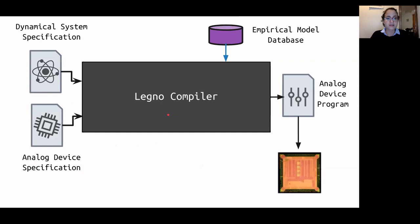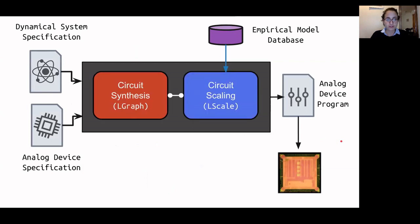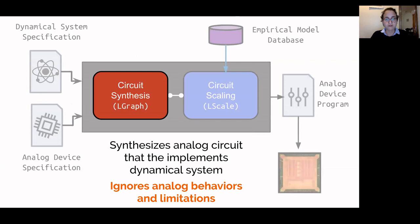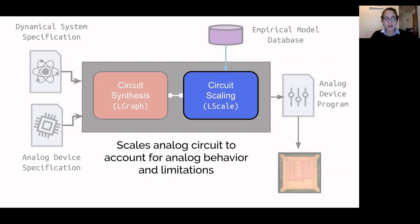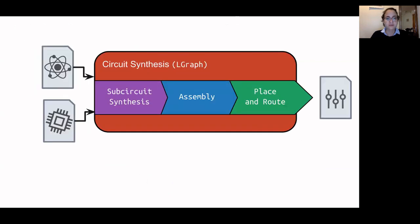Now that we understand the inputs and outputs of the compiler, let's discuss its internals. Compilation is broken into two major phases: circuit synthesis, which synthesizes the analog circuit implementing the dynamical system while ignoring analog behaviors and limitations, and circuit scaling, which scales the circuit to account for all the analog behaviors and limitations we discussed. The circuit synthesis process itself is broken into three smaller stages: subcircuit synthesis, assembly, and place and route.